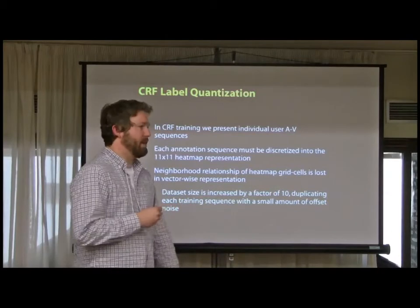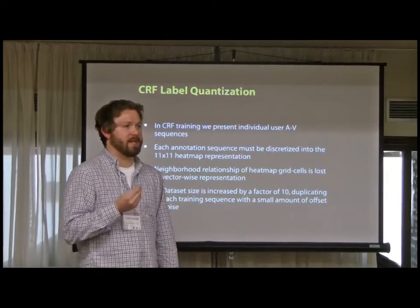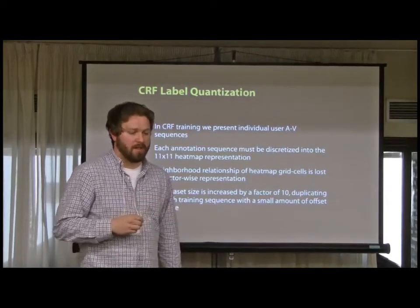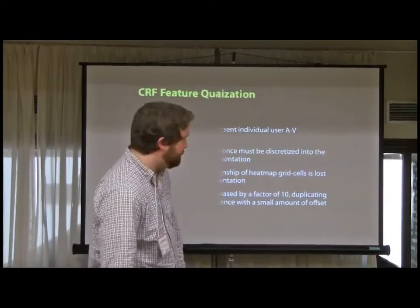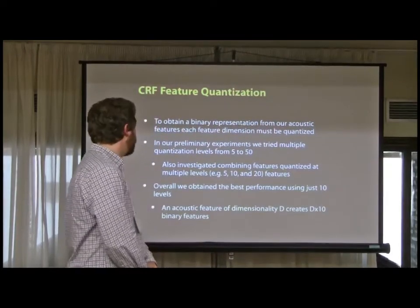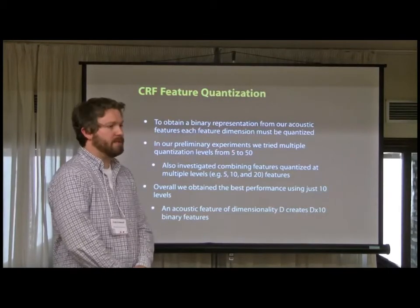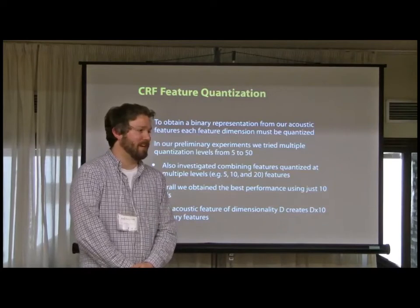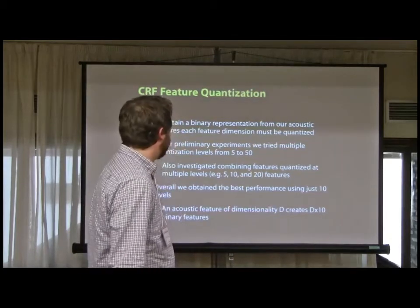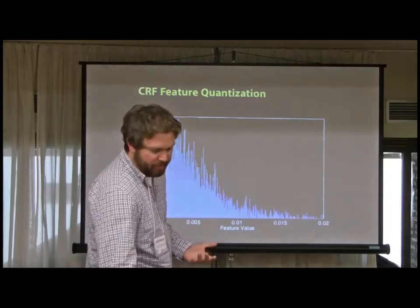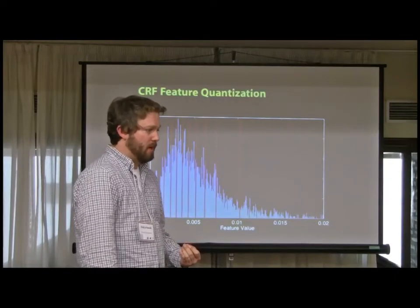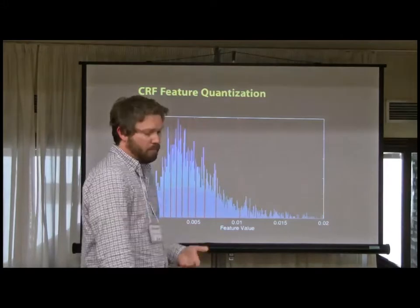To get around that, we duplicate each example another nine times and add a small amount of noise to give the model the ability to learn that spatial relationship. CRFs are also highly optimized for binary features, so we quantize each feature dimension into 10 bins. We take each feature dimension one at a time, collect all values, take a histogram, break it up into 10 equal-energy bins, and the quantized value is just whatever bin the individual feature value lies within.